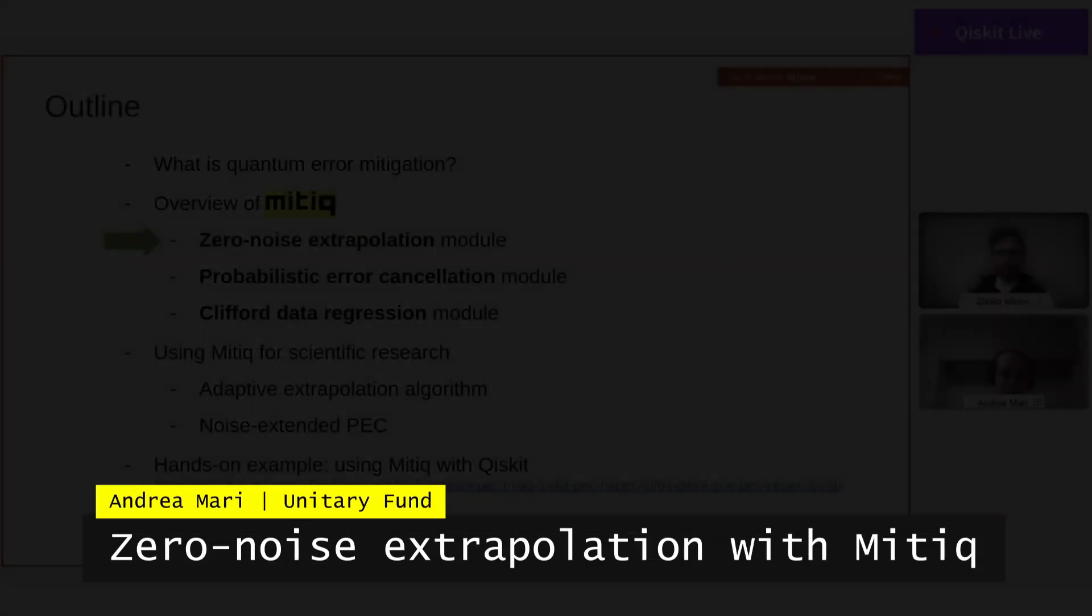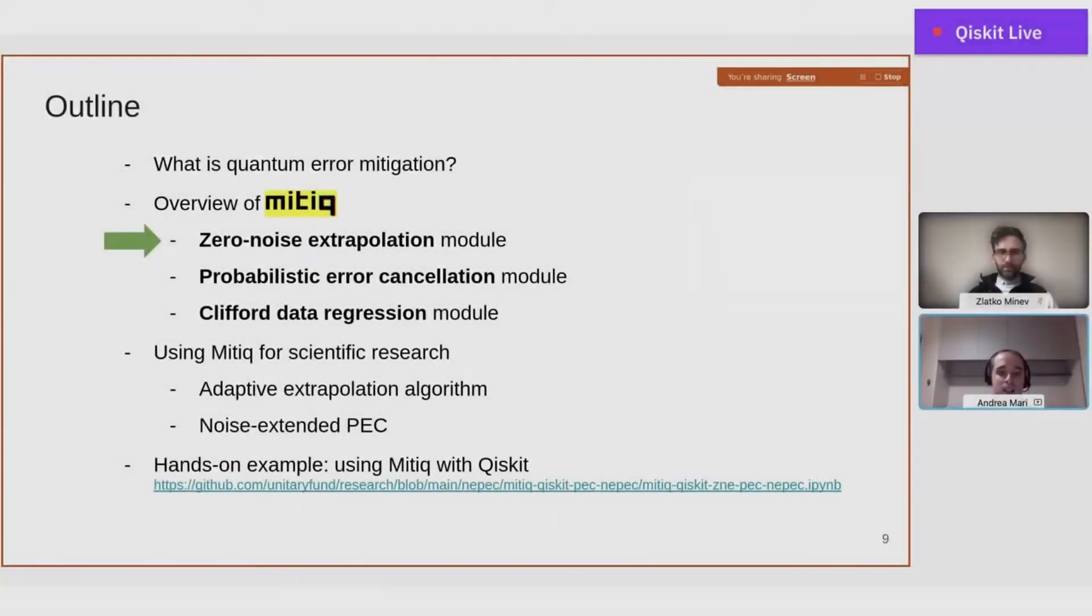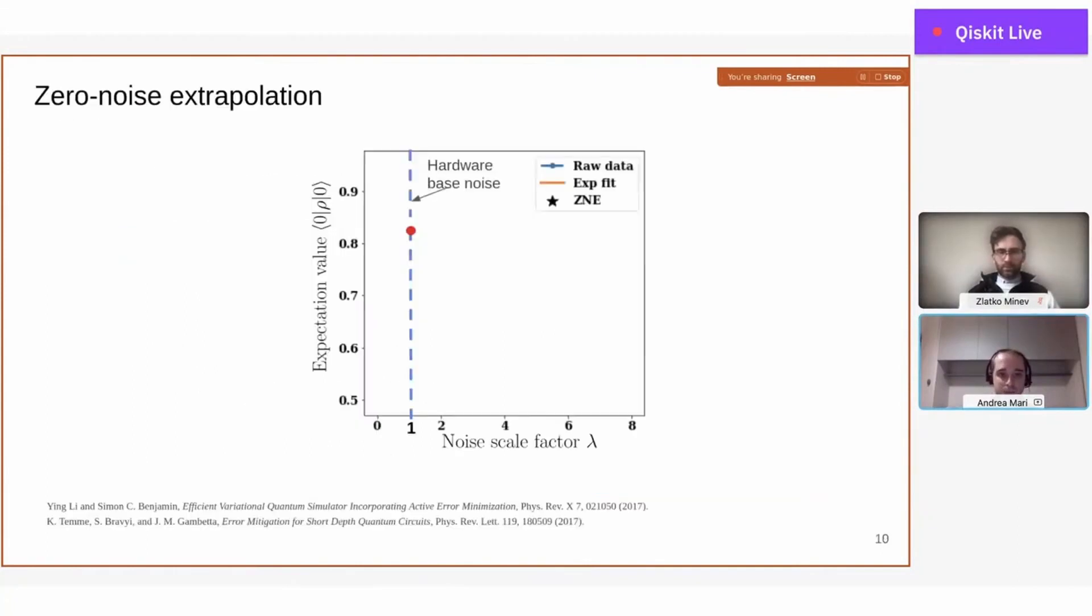Let's see how this framework can be used to apply zero-noise extrapolation. Zero-noise extrapolation is a very intuitive way of reducing the noise of a computation. Imagine that you plot in this diagram the value of an expectation value on the y-axis and the level of noise on the x-axis.